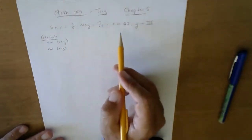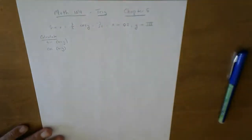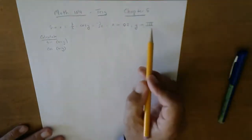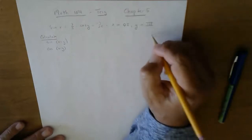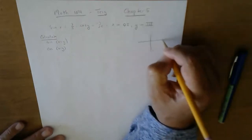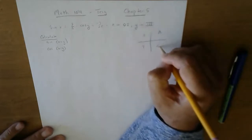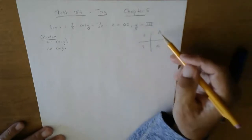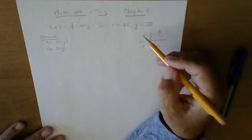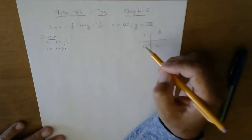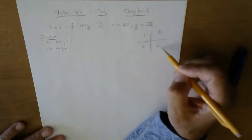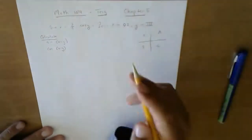Once again, why is this important? Because when I look at my quadrants, I have All Students Take Calculus here. All the trig functions are positive here, just the sine here, just the tangent here, and just the cosine here.